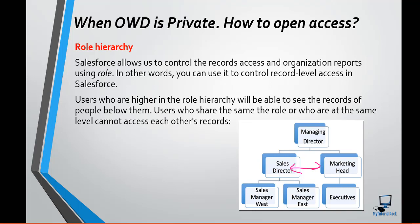In order to give access to people at a particular role or subordinate, we are going to use the sharing rule. We will create a sharing rule in which we open up access to records for a particular group of users, a particular role, or a particular role and subordinates. That is what the sharing rule is for. The role hierarchy tells you that users who are above in the role hierarchy will be able to see the records of the people below them.